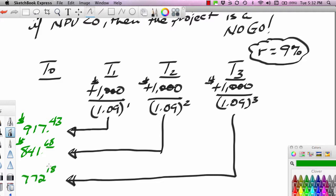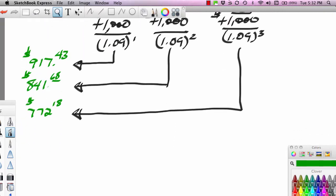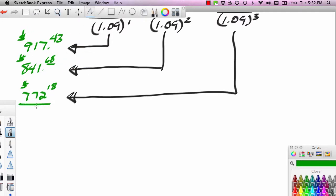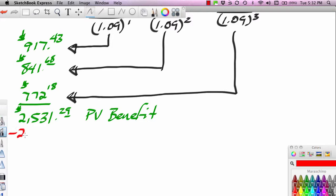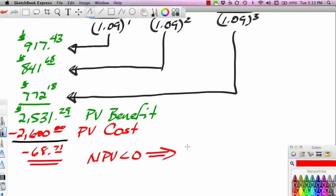The second PV is 772.18. If we go ahead and add together these PV benefits, we actually get a much lower number, 2,531.29. This is our PV benefit. We have not changed our PV cost, which is minus 2,600. If we calculate, we see we're in the red on this project. PV benefit minus PV cost is a minus 68.71. We have an NPV less than zero. Therefore, the project is a no-go. It would not pay to do this project.